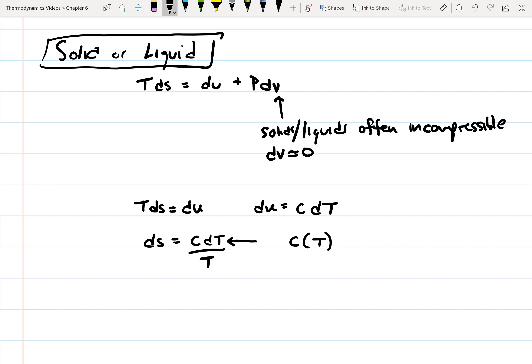We do have heat capacity data available for a variety of temperatures. So what we're going to do is assume that we have a constant heat capacity.